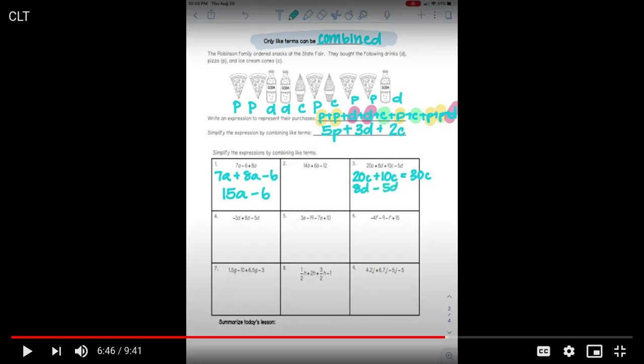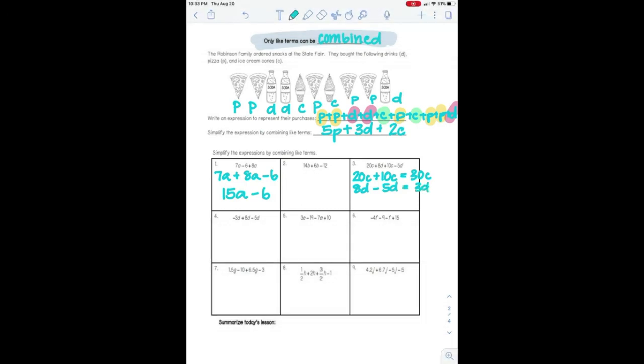And then I have 8D minus 5D. So one thing I want to tell you is when you're combining like terms, you pretend like that operator is kind of attached to that coefficient. Okay. So that 5 has to be a minus 5. I could not add that 5. It has to stay a minus. Okay. I've got 8D minus 5D, which gives me 3D. So I'm going to have 30C plus 3D here.